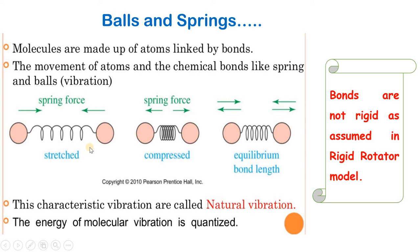It can be stretched like a spring or it can be compressed, as you can see in this image. In other words, the atoms and the bonds connecting them can vibrate like a spring about some mean position. Such characteristic vibrations are called natural vibrations, and the energy of such molecular vibration is quantized.